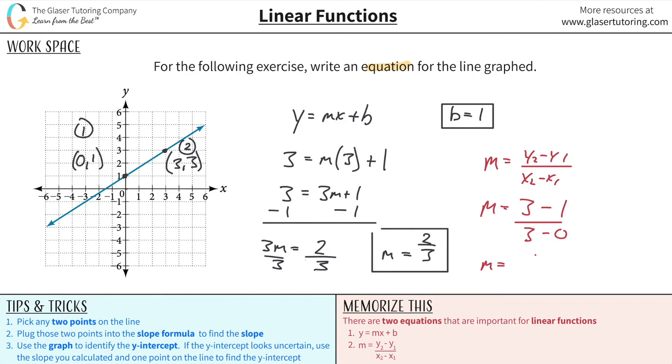So what does this work out to be? m will be equal to 3 minus 1 is 2, 3 minus 0 is 3, and look, they're the same. So it didn't matter which way you did it, but it's both ways.